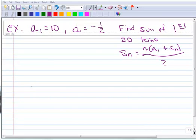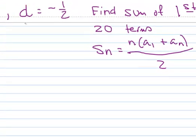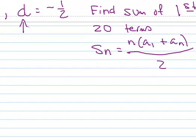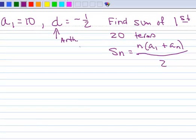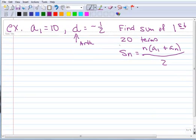Here's a different example. We want to find the sum of the first 20 terms. We know that a sub 1 is 10 and d is negative 1 half. Since we're given d, we know that this is arithmetic and not geometric. So this is the formula we want to use.